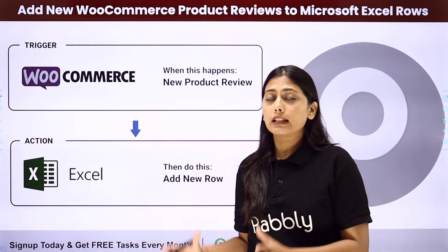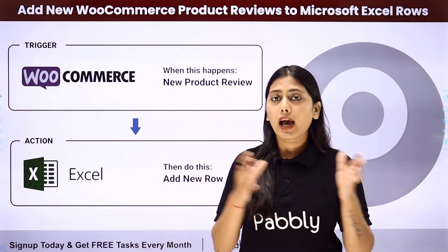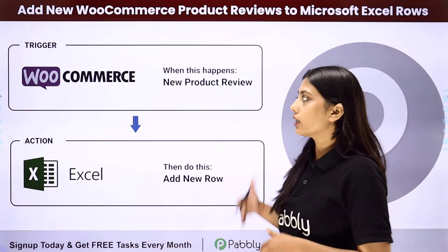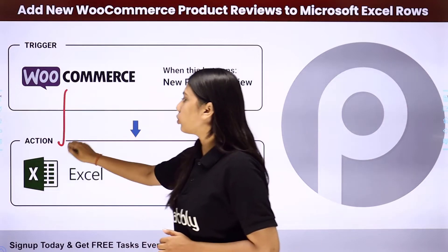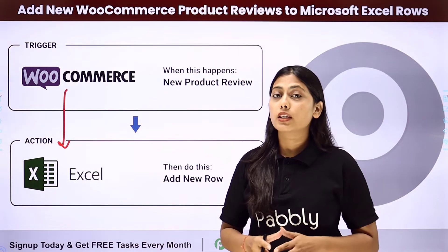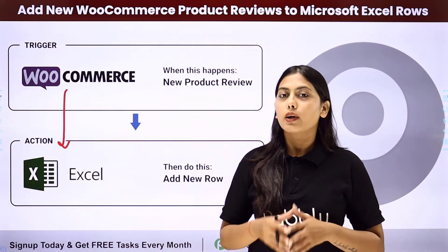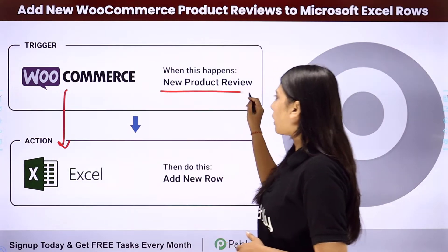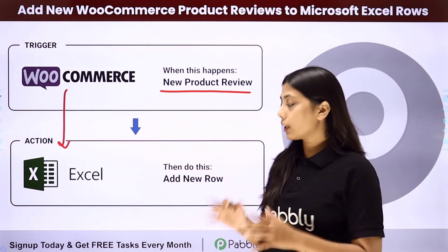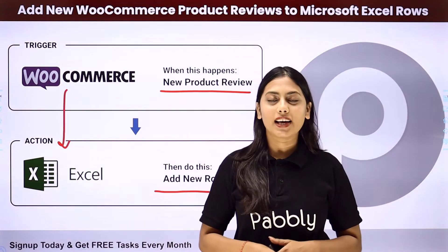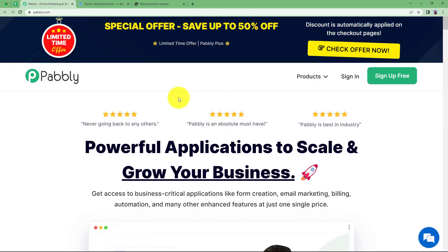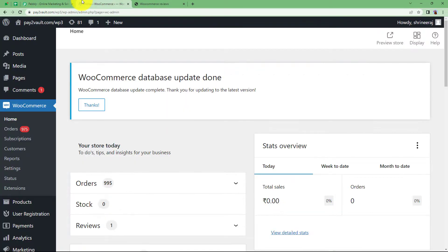Rather than copying one review and then pasting it in MS Excel, you can create a complete automation where you will be able to integrate both of these applications. We can do this with the help of Pabbly Connect, where our trigger will be new product review of WooCommerce and our action will be to add a new row in MS Excel. Let us learn how to keep a record of all the reviews on any specific product that you receive on your WooCommerce.